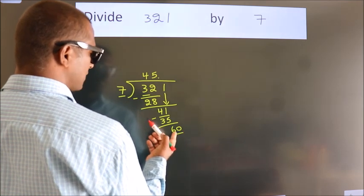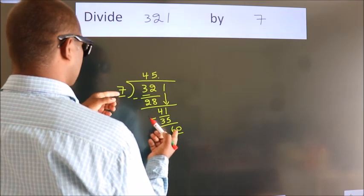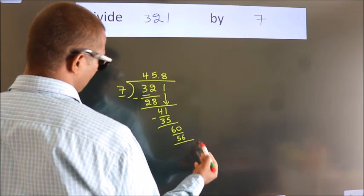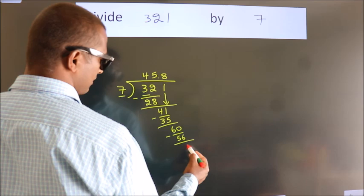A number close to 60 in the 7 table is 7 eights, 56. Now we subtract. We get 4.